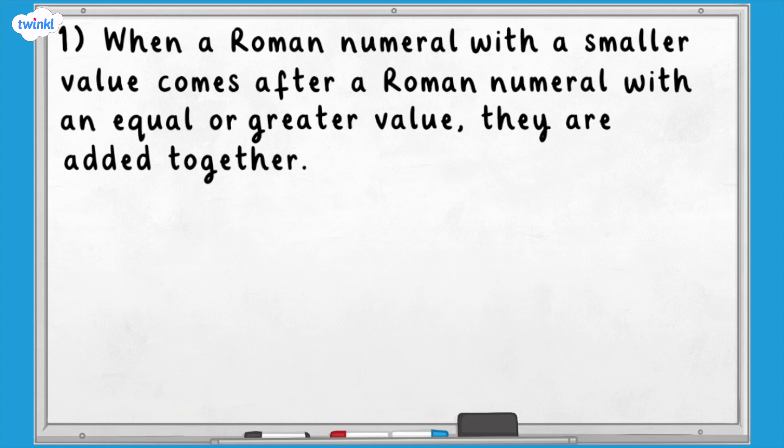For example, in the Roman numeral XI, the X represents 10 and the I represents 1. I has a smaller value than X, so we add the values together. 10 add 1 equals 11, so XI represents 11.